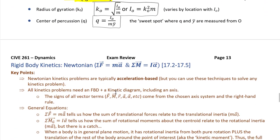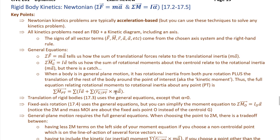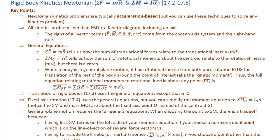That wraps up the first section of chapter 17. Moving on to using mass moment of inertia to solve problems — sections 17.2 through 17.5 are lumped together because they cover the same topic with different nuances and simplifications. Newtonian kinetics is acceleration-based, and all kinetics problems need a free body diagram and a kinetic diagram. In the kinetic diagram for chapter 17 we focus on acceleration terms: linear acceleration a and angular acceleration alpha. Signs for all vector terms come from the chosen axis system and the right-hand rule.